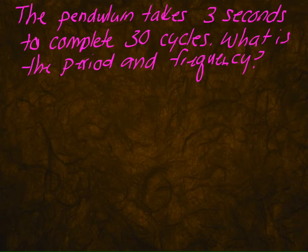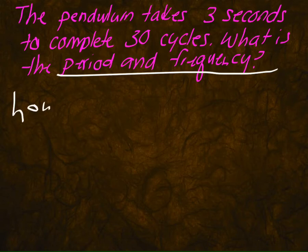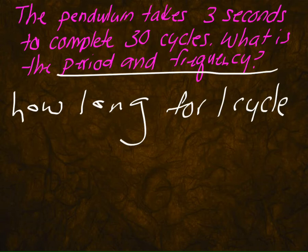Next: a pendulum takes three seconds to complete 30 cycles. What is the period and frequency? Here's a hint — anytime you see 'what is the period and frequency,' know you have to figure out the period first before you can figure out the frequency. Remember what period is: it is the time it takes for one full cycle. It says it takes three seconds for 30 cycles, and we want to know how long for one cycle.